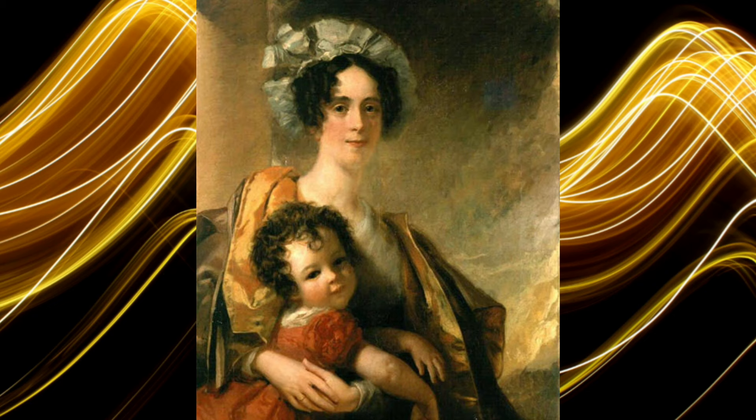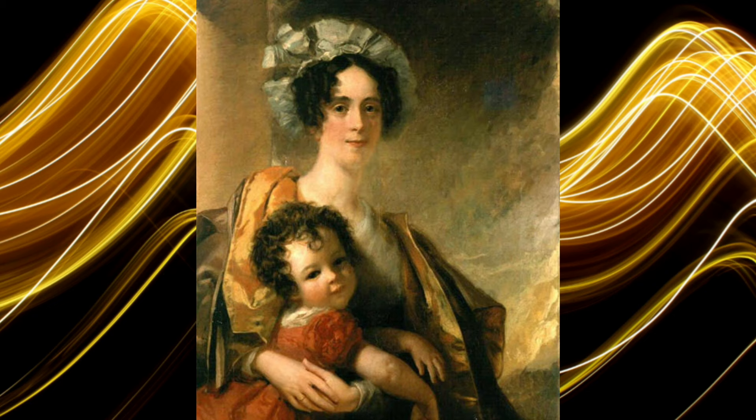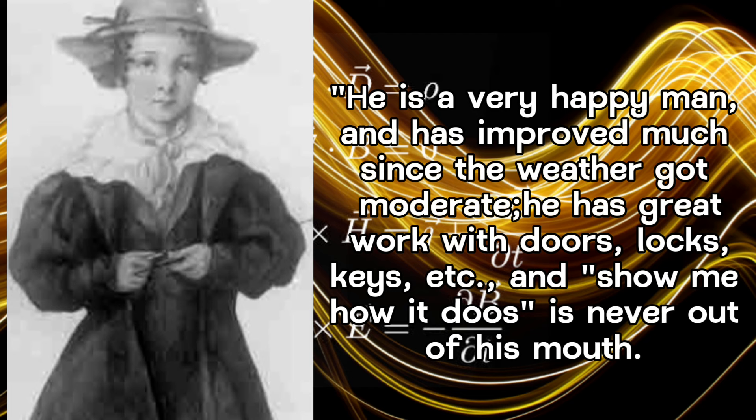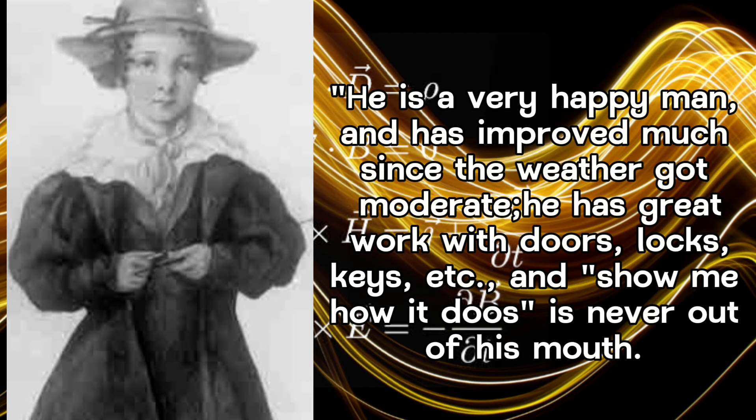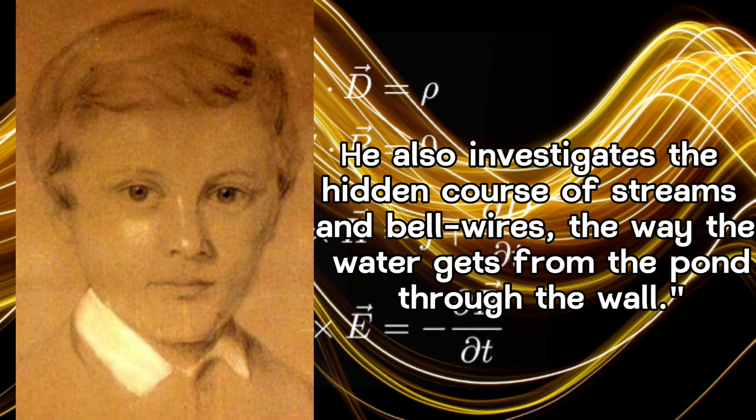Even as a child, Maxwell displayed a prodigious intellect and a remarkable curiosity for the natural world. His father in a letter written in 1834 when James was about three years old remarked of him: He is a very happy man, and has improved much since the weather got moderate. He has great work with doors, locks, keys, etc., and 'show me how it does' is never out of his mouth.